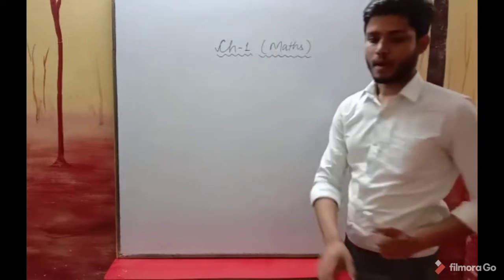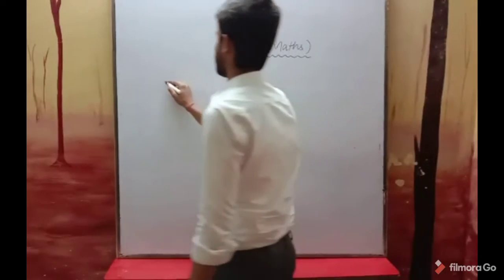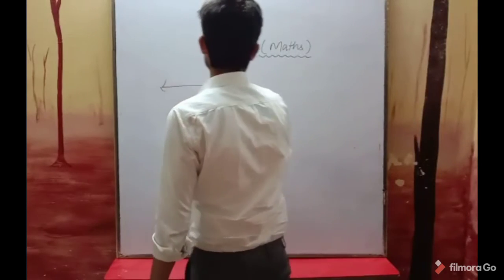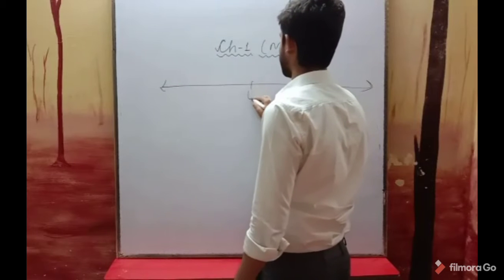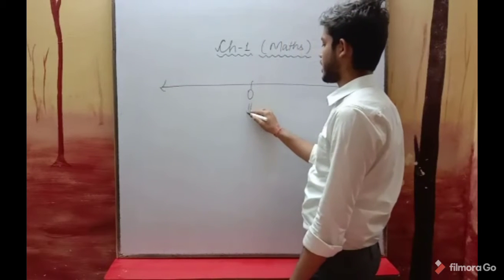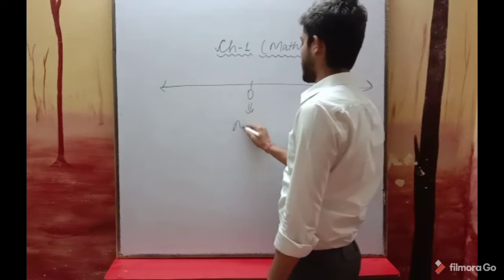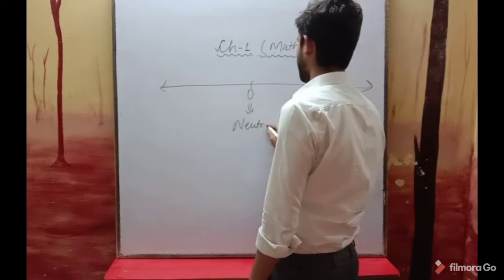When we draw a number line, we can see that zero is found in the left-center area — actually, zero is in the middle of the number line. Zero is neutral.